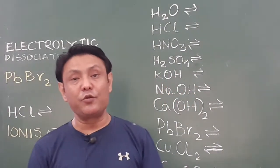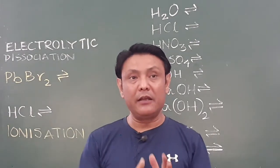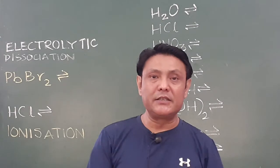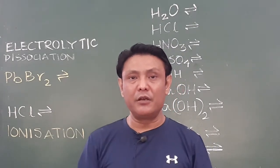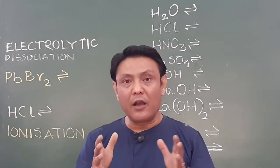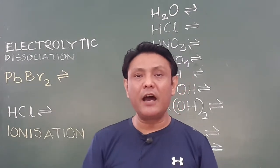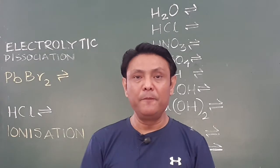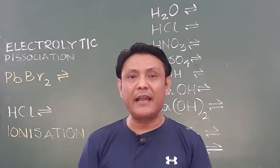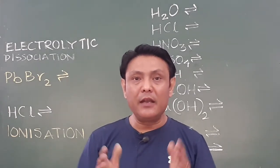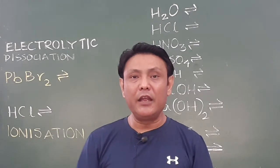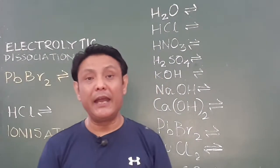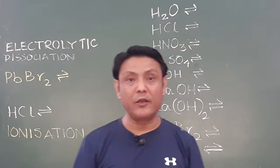In an electrolyte, for example NaCl dissociates into Na+ and Cl- in its solution or in the molten state. The number of positive ions and the negative ions are absolutely equal. The number of cations and anions in the electrolyte are equal, so as a whole the electrolyte is in equilibrium — electrolytic equilibrium as we call it.